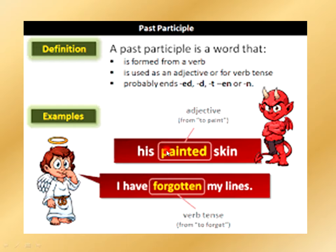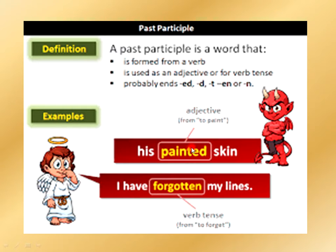For example, as an adjective — from the verb 'to paint,' we get 'his painted skin.' Over here it ends with 'ed.' This is the adjective form, because 'paint' is a verb that becomes an adjective here, showing the quality of the noun. So this is the past participle in this sentence.